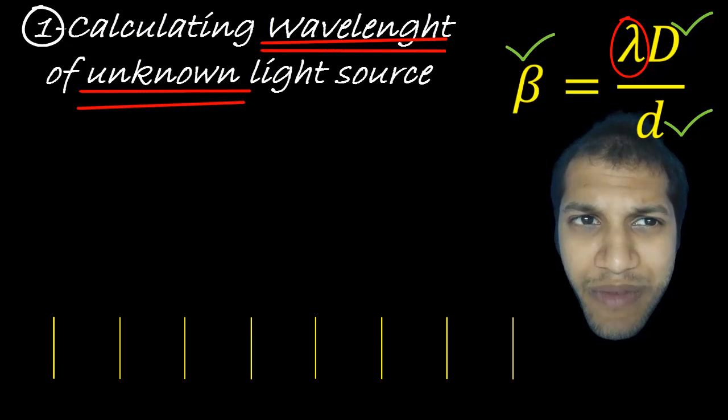Now you will say, well, this is nothing new. We've discussed this before. In fact, Young did this and calculated the wavelength of light. So why use the grating? You're asking me why use the grating? Why go for double slit?